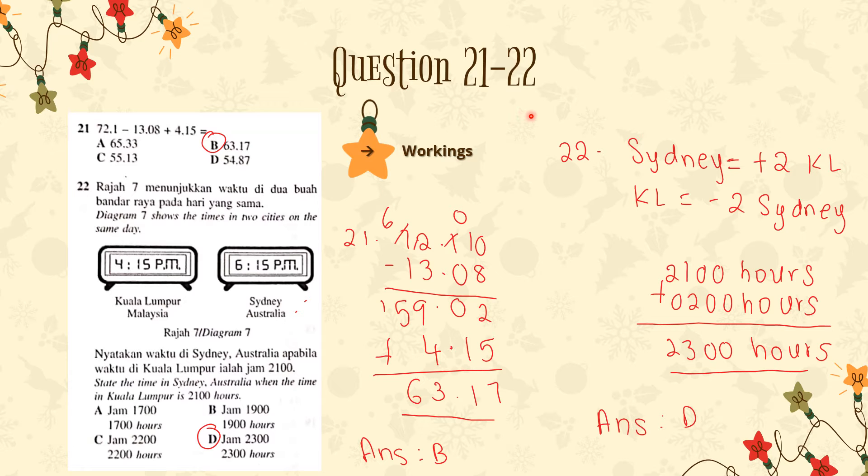Alright, Question 21 to Question 22. As you see here, I've already solved them, but let's see how I did it. Question 21 is a direct question because we do not need to find the number sentence from the given paragraph. The number sentence is already given there and we just have to solve it. So 72.10, we just have to minus with 13.08 and then the subtraction total will be 59.02. Then we have to add 4.15 to the subtraction total and then we will get the answer 63.17. We just have to subtract and add as per normal. So we get the answer is B, 63.17.